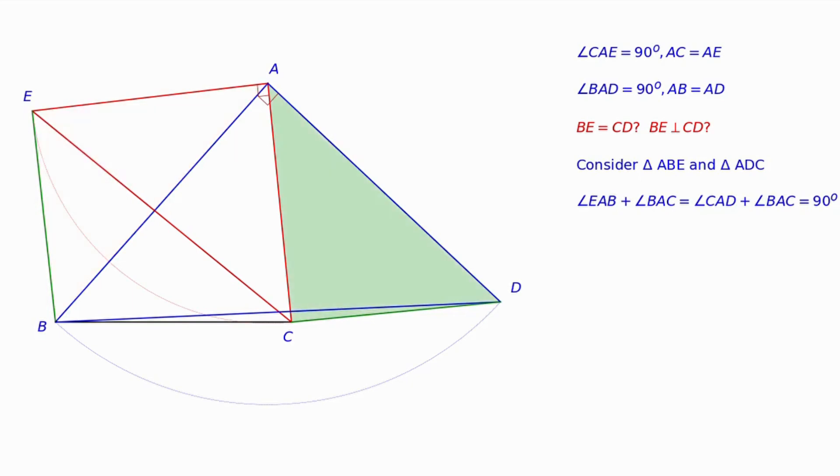Indeed, the angles EAB and CAD are equal, because the sum of each of them with the angle BAC equals 90 degrees.